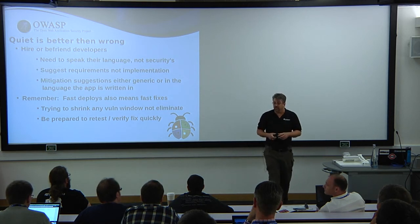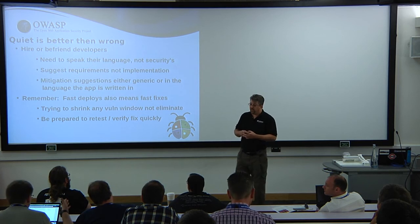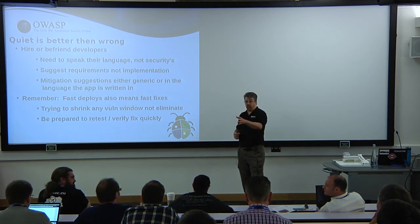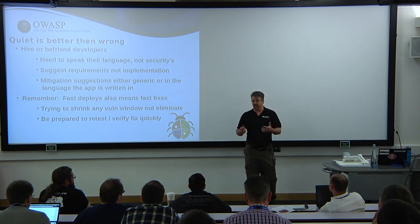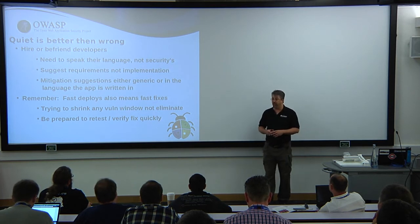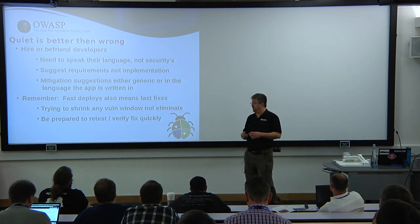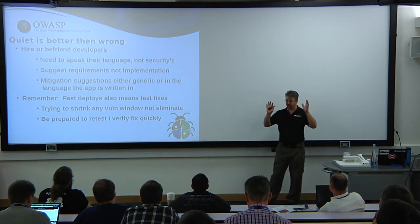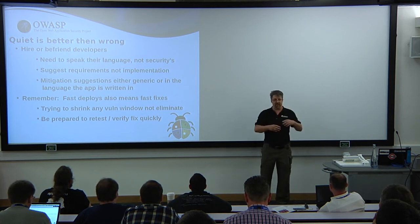The question was: do you think about putting one security person into each of the other teams instead of doing this separately? We want to get there, but we don't have enough people — that's really what it boils down to. That would be the ideal case, but we just don't have the bodies. Because then I would really, really know the product. Right now I have to be schizophrenic — really know NOVA while I'm testing it, and then forget that and really know something else.